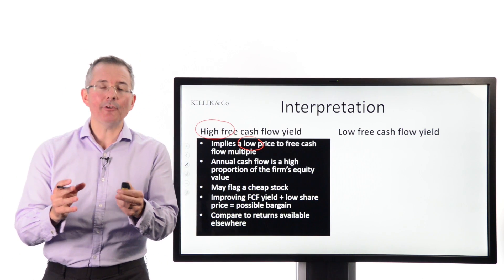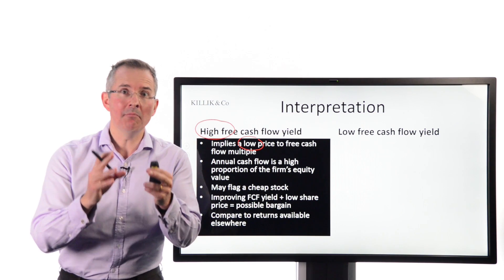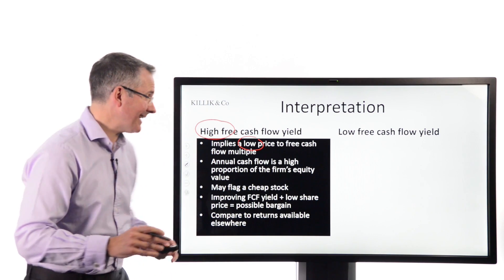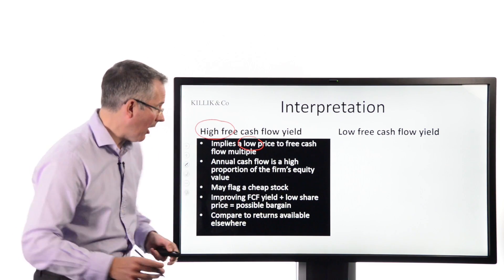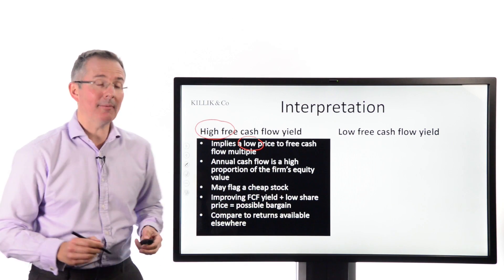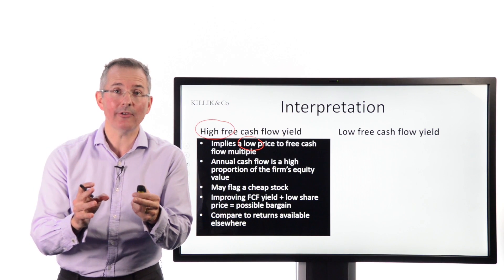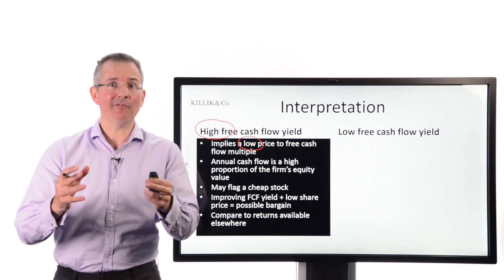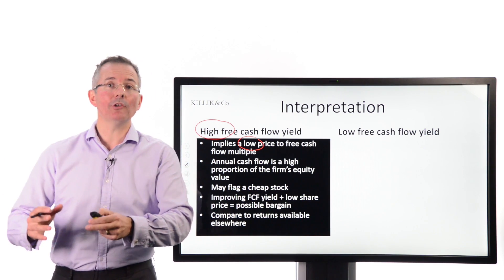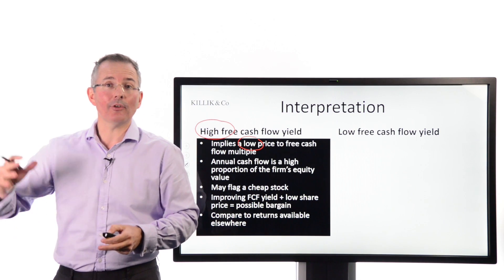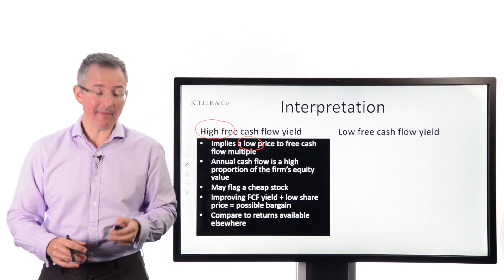If a firm can generate a lot of free cash flow and that's a high proportion of the current share price, maybe this is a stock that warrants further investigation. Improving free cash flow yield combined with a low share price is therefore a possible bargain. You want to compare it to the return available elsewhere — if you can get 10% consistently from a stock on a free cash flow yield basis, that compares pretty favourably to what's available on a bank account or a Gilt. Firms that generate consistently high free cash flow yields are potentially attractive to income investors.